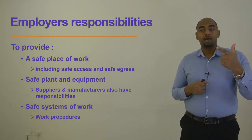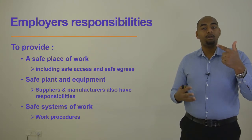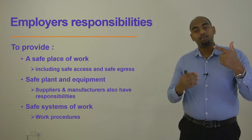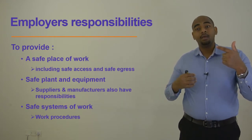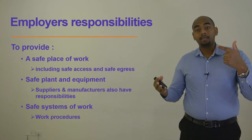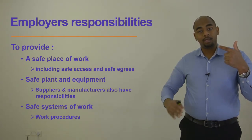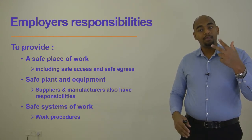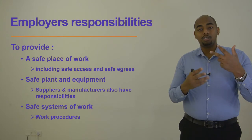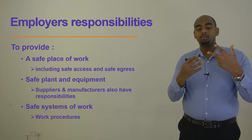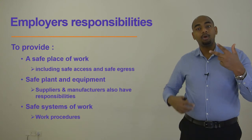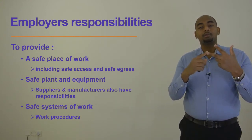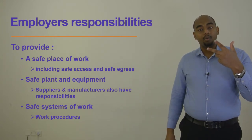Safe plant and equipment is the responsibility of suppliers and manufacturers. When they design and manufacture equipment, they must ensure it is 100% safe. All hazards and risks within the equipment must be eliminated and reduced as far as possible. The safe system of work refers to the work procedure — it is the employer's responsibility to provide safe procedures, telling employees how to conduct their tasks on the work site.